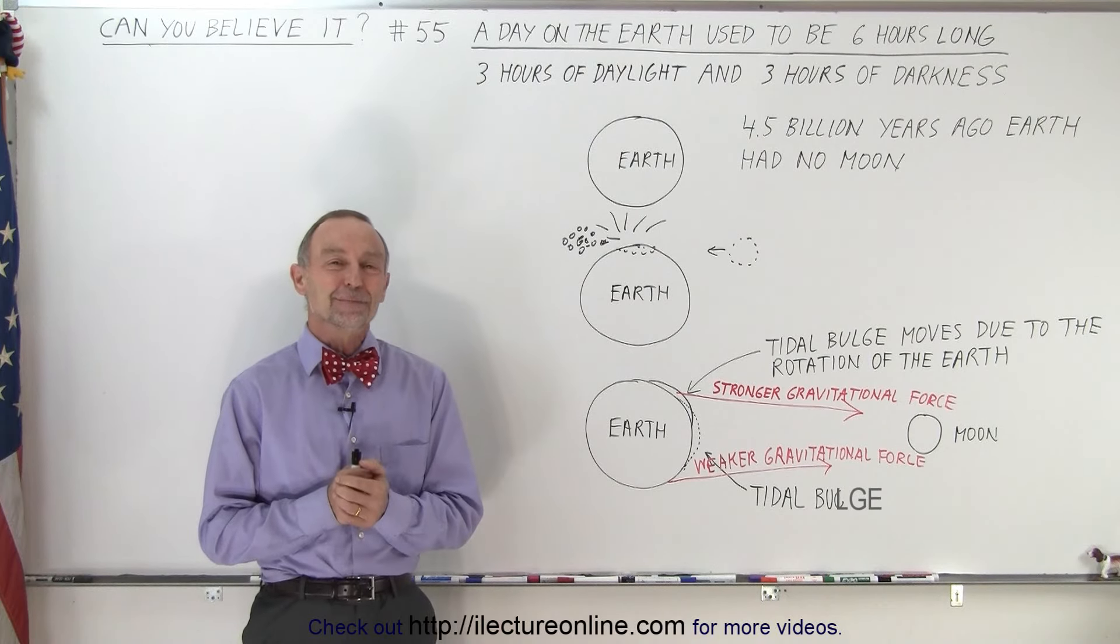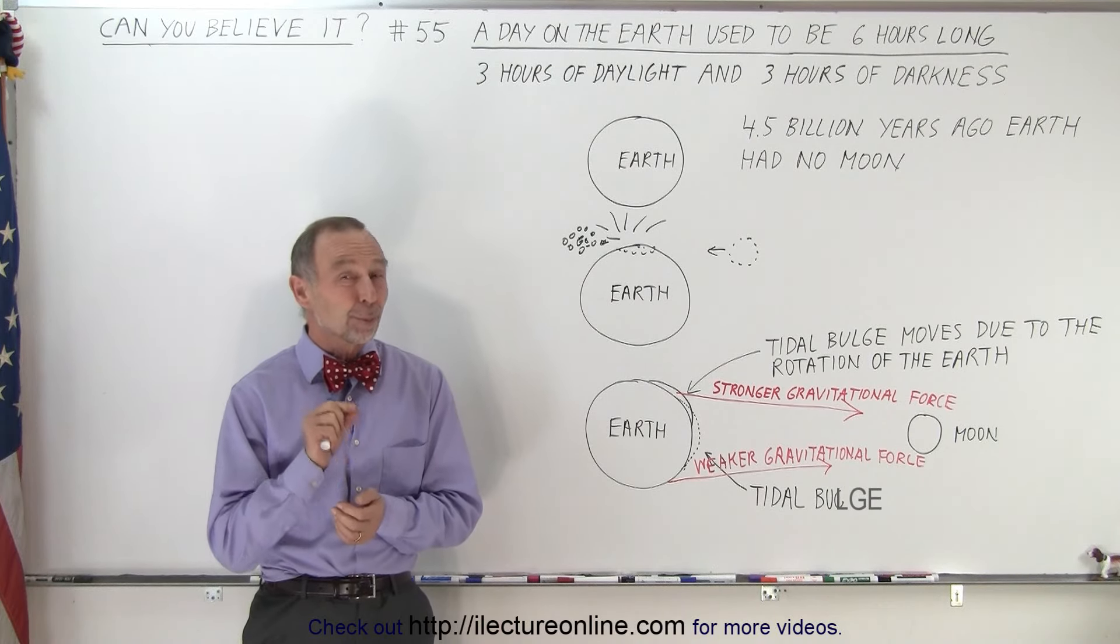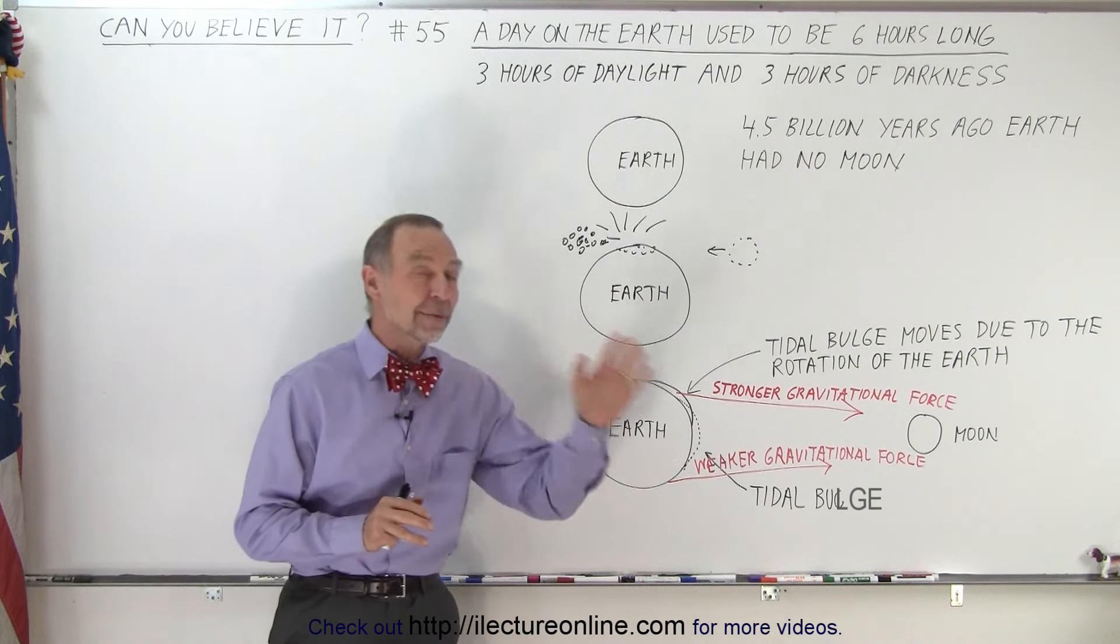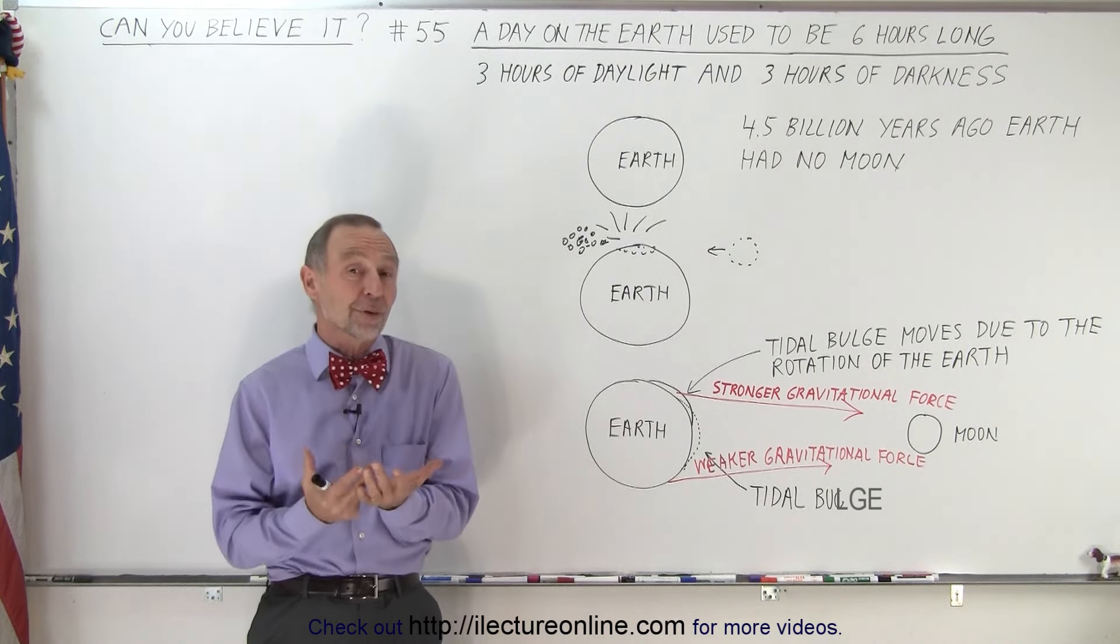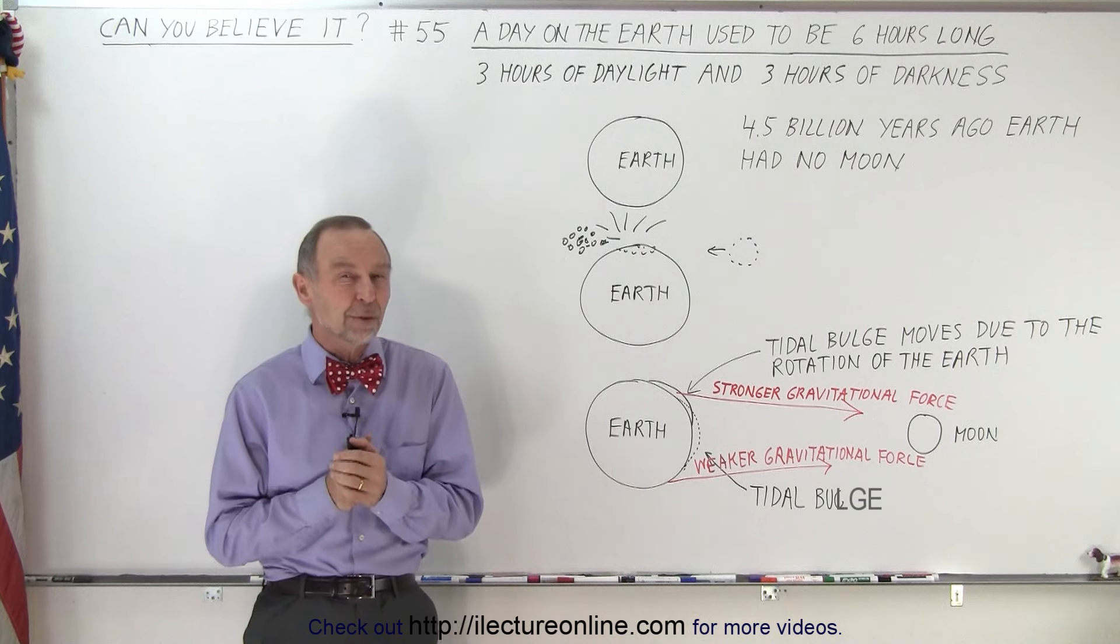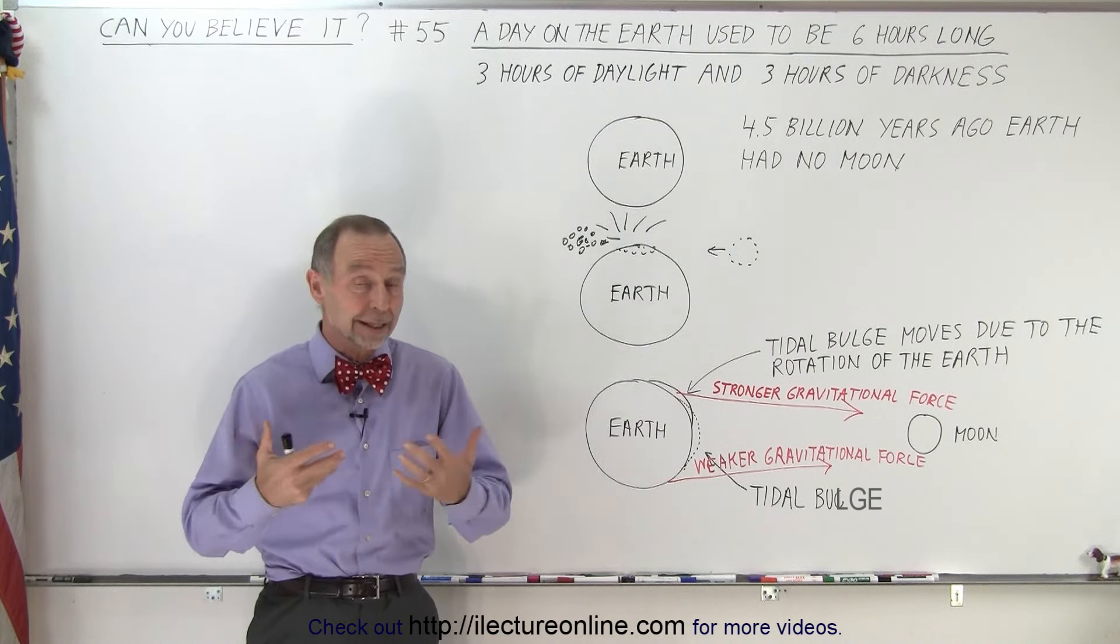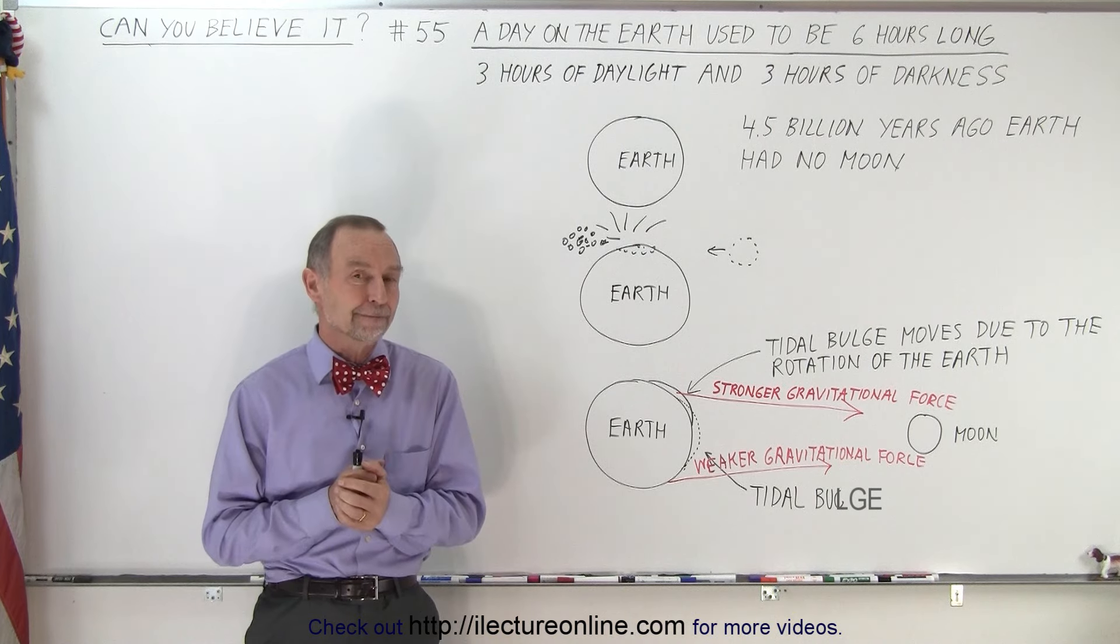Welcome to our lecture online. Few of us probably realized that once upon a time, a very long time ago, a day on the earth was not 24 hours, it was about 6 hours, which means that there was 3 hours of daylight and 3 hours of night time.